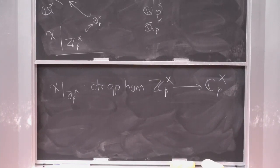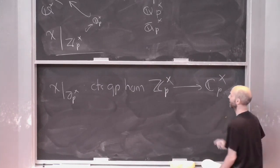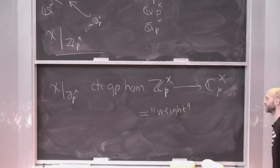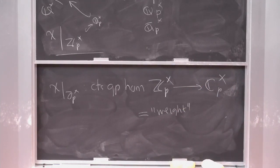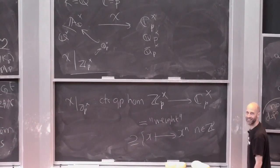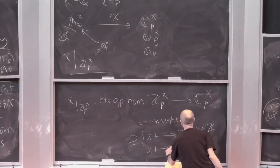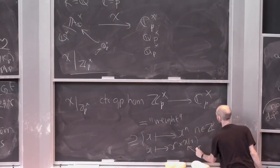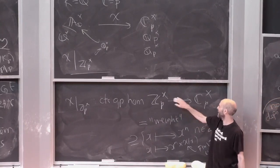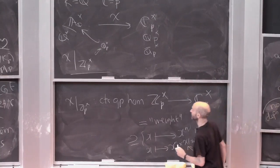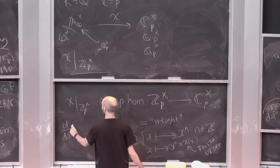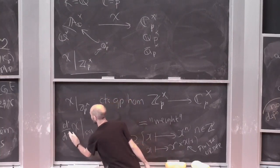Weight space contains maps of the form x goes to x to the power n for n an integer, and also maps x goes to x^n times chi(x) where chi is a finite order character. So the eigenvariety for GL1 over k has a map down to weight space. You could look at the p-adic derivative d/ds of chi at s equals 1 — that's just going to be whatever a good name for a complex number is.